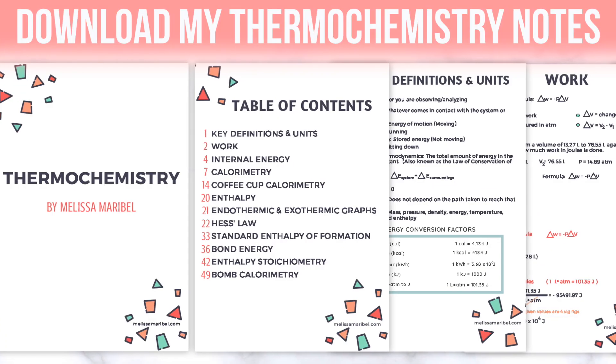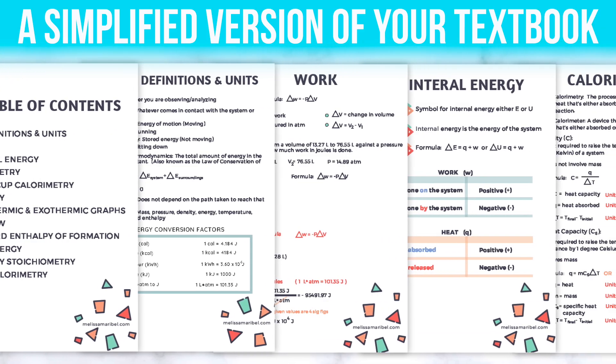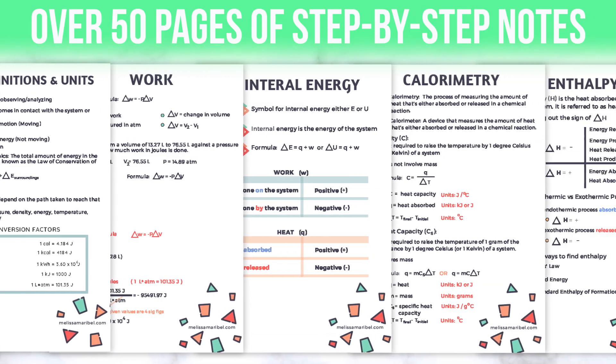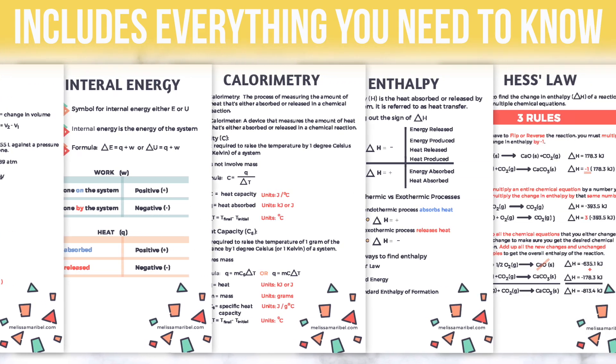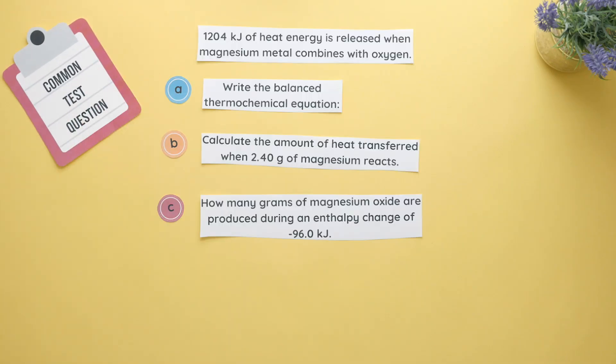This page is part of my 50 page thermochemistry guide which has everything you need to know for thermochemistry and enthalpy stoichiometry. The link is in the description box along with other helpful resources. Now for this common test question we will find the balanced equation, heat, and the mass.